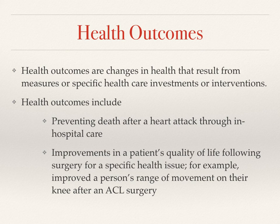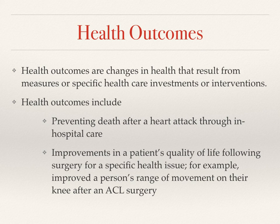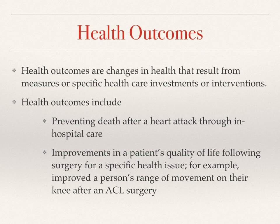Another health outcome example: how do you improve a person's range of movement on their knee after ACL surgery? It's not just that you go in surgically to repair their ACL, but you have to have specific interventions to make sure they'll be able to walk again. In order to improve a person's range of movement, the intervention may be physical therapy. The health outcome will then be an improvement in their range of movement, or their ability to have a fully functioning ability to walk. So when we talk about health outcomes, it's about what happens as a result of an intervention.